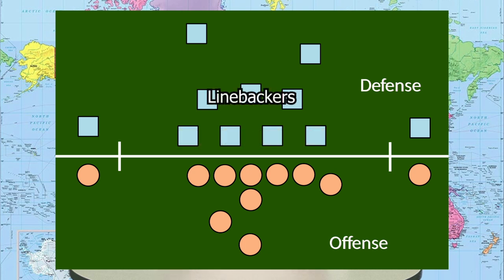Linebackers are usually behind the defensive line and serve as defensive leaders — the second line of defense. They're often seen as the leaders of the defense, communicating with the defensive line, defending the run, stopping the quarterback and running back, and containing tight ends. A lot of times when tight ends get the ball, they're usually tackled by the linebacker.